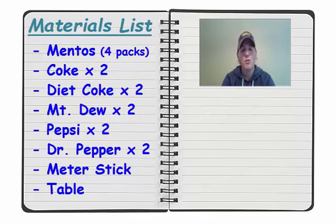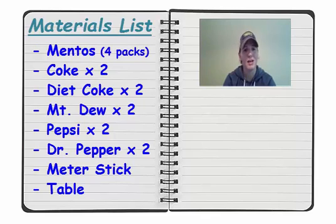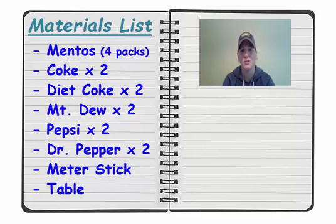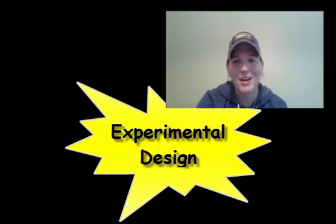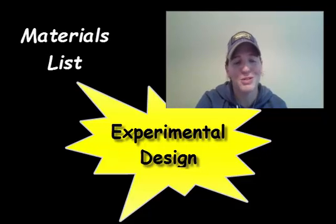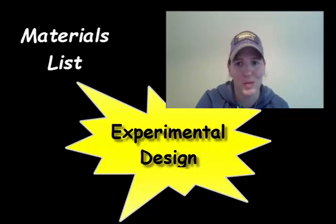This is my materials list. We have four packs of Mentos, two bottles of Coke, two bottles of Diet Coke, two bottles of Mountain Dew, two bottles of Pepsi, two bottles of Dr. Pepper, a special medicine dispenser, and a table. We've taken care of the materials list part of our experimental design.